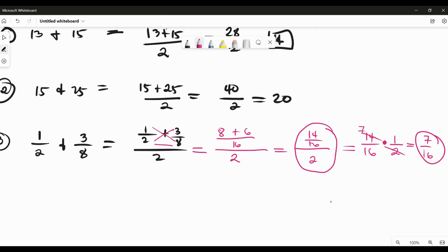So the arithmetic means that we have are 14, we have 20 here for number 2, and 7 over 16 in number 3. So that's how we solve arithmetic means of 2 numbers. Thank you.